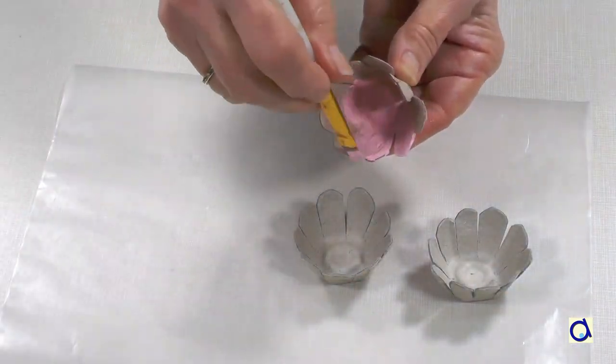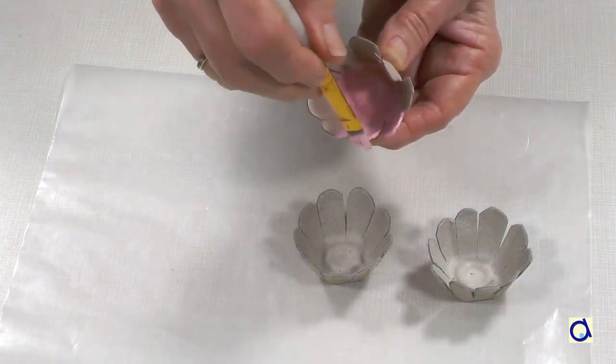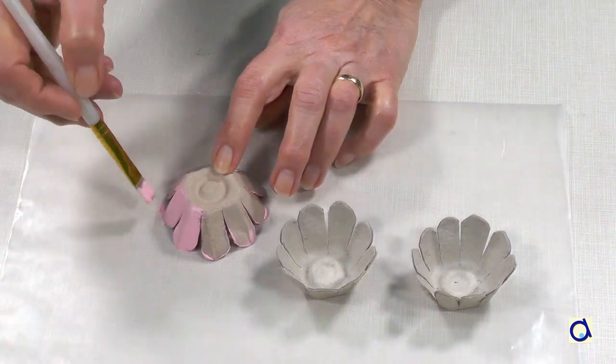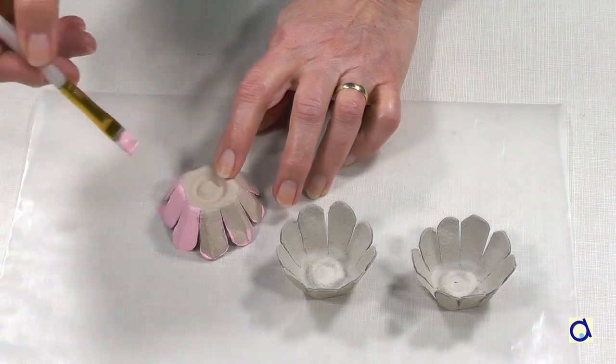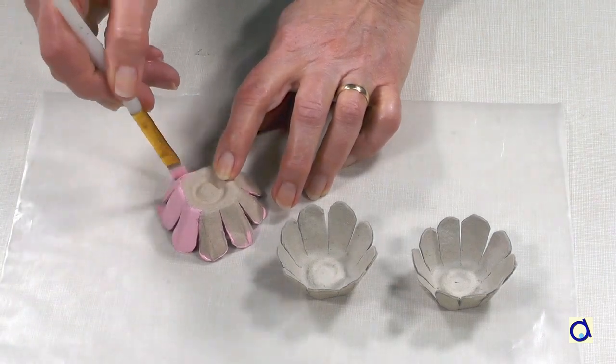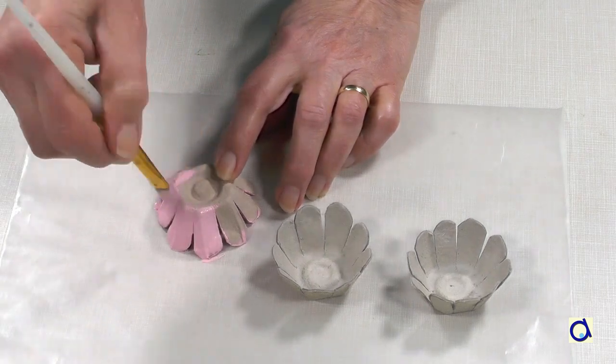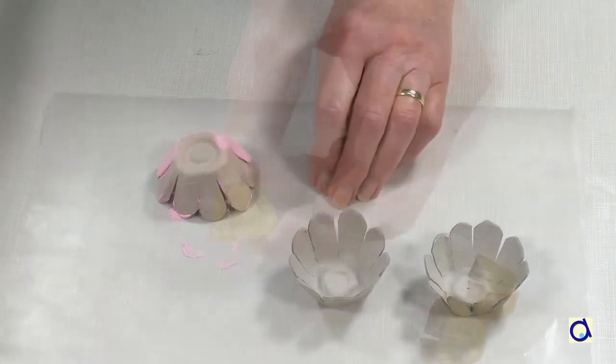Paint the flower in a color of your choice. I decided to paint pink flowers. Since the pink paint already has white in it, you don't need a coat of white paint to start. Apply several coats of paint.